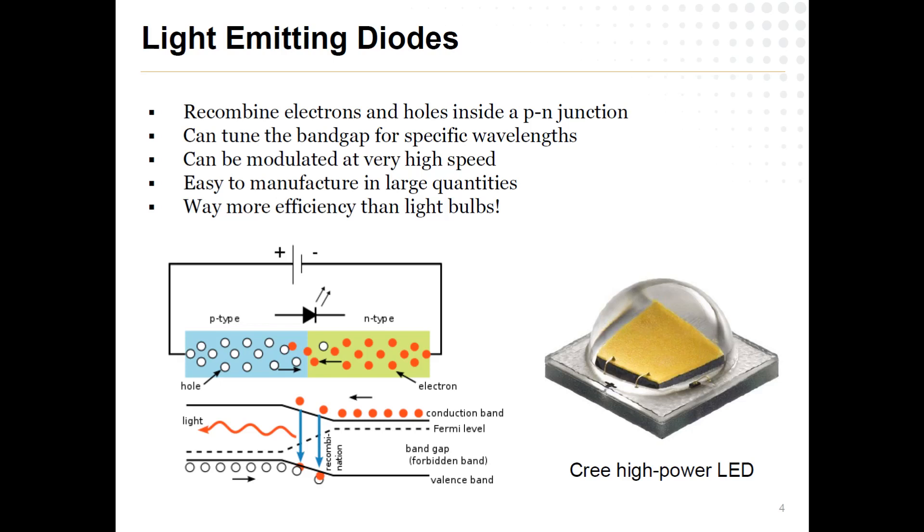And if you play around with this band gap here, you can play around with the energy of the photons and give rise to various colors. So that's pretty cool. And here is an example. Cree, I think, is the company that makes a lot of high-power LEDs. And this is one of their chips that I just pulled off the internet somewhere. It's a nice little die, which means you can manufacture these things using our standard semiconductor infrastructure.